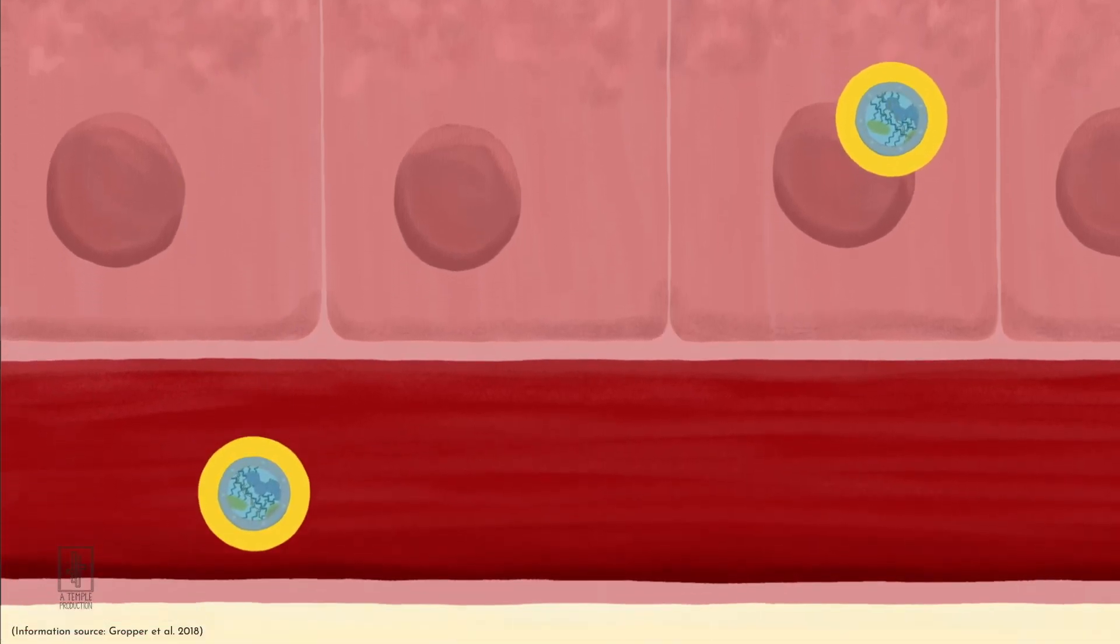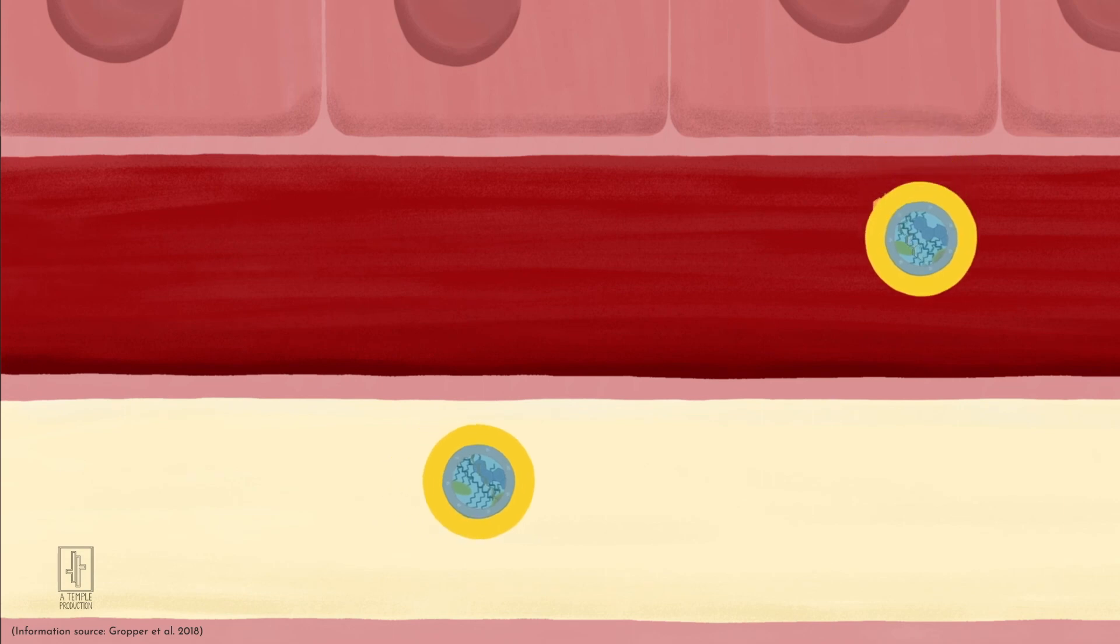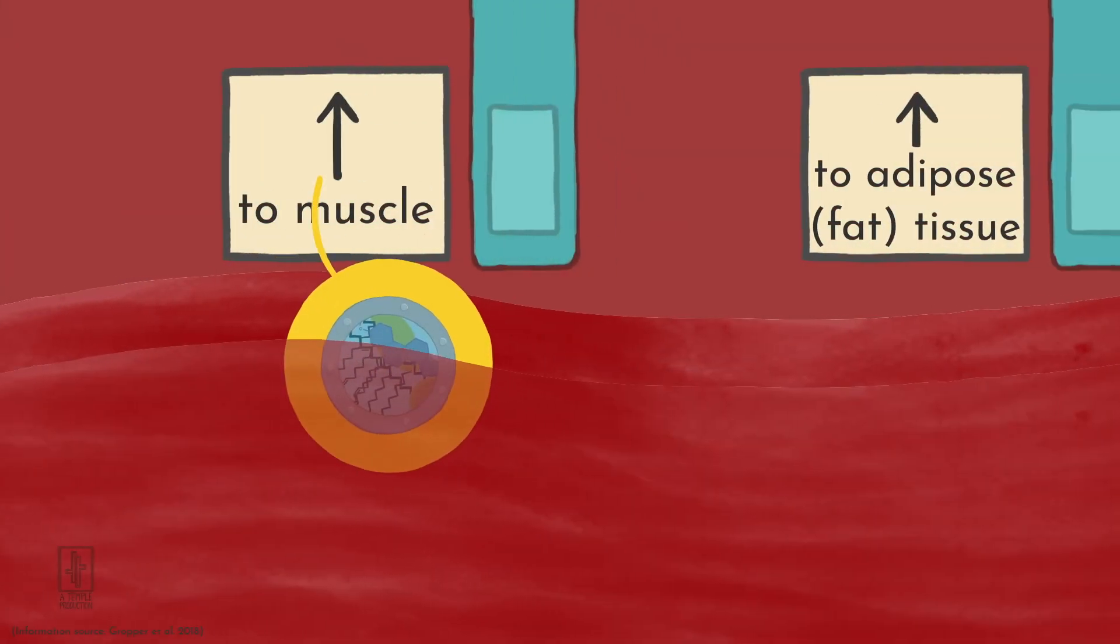The chylomicrons can now move into the lymphatic system, bypass the liver, and enter the bloodstream so they can deliver the fats to muscle and adipose tissue.